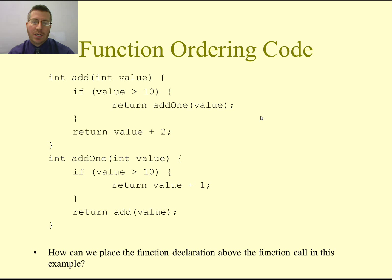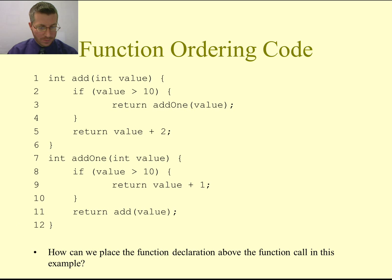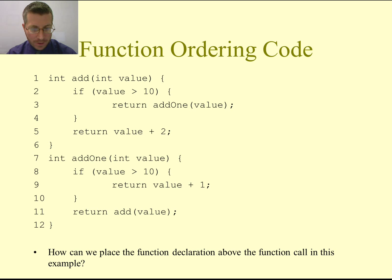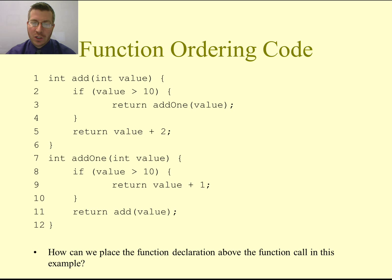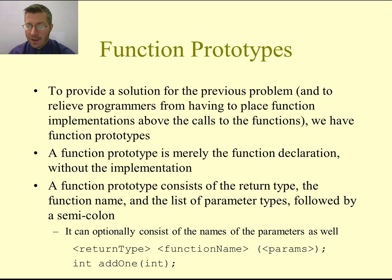Here's an example of a deeper problem with ordering functions. These two functions call each other — on line eleven, we're calling the add function from the add1 function, and on line three, we're calling the add1 function from the add function. This is actually known as indirect recursion. It's not possible for us to put the function definition above the function call because we can't put both functions above the other since they each call the other. In this case, we're going to have to use function prototypes, which provides a solution for indirect recursion and also allows the programmer to order functions however they like.